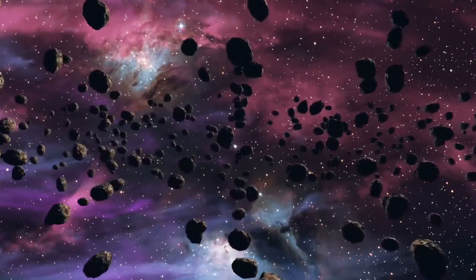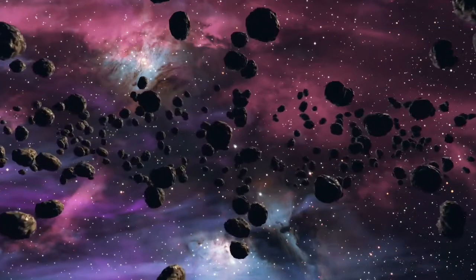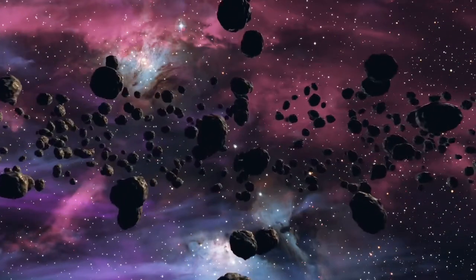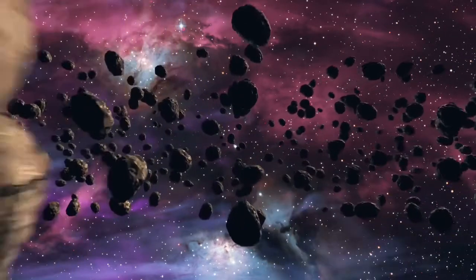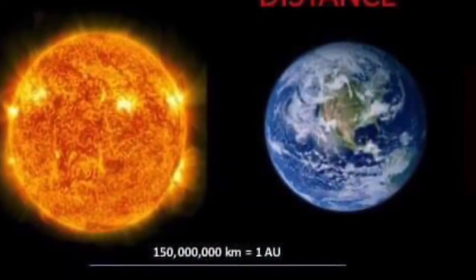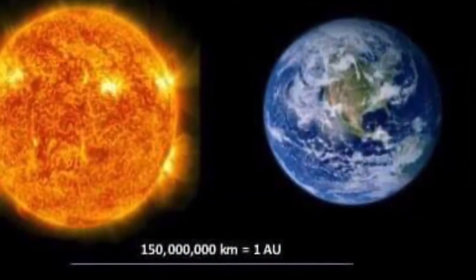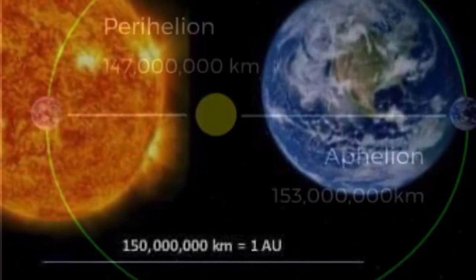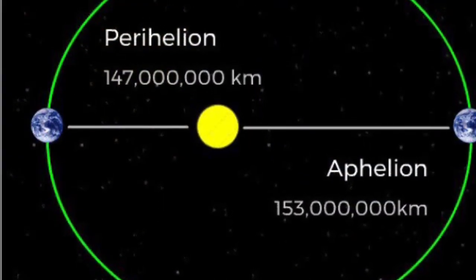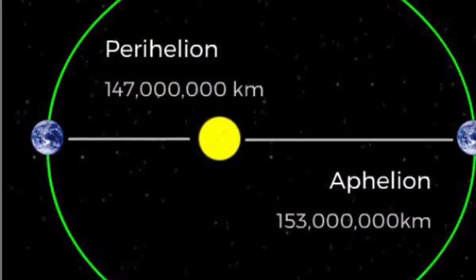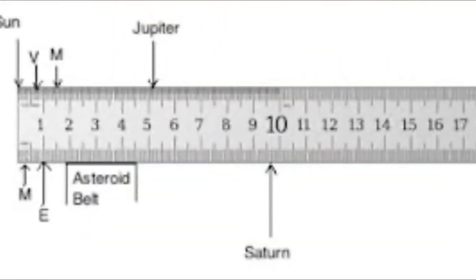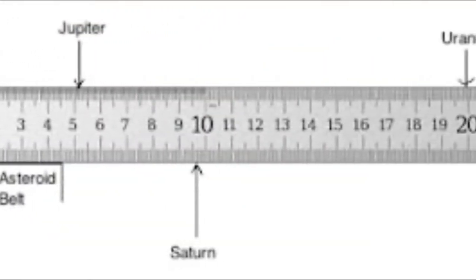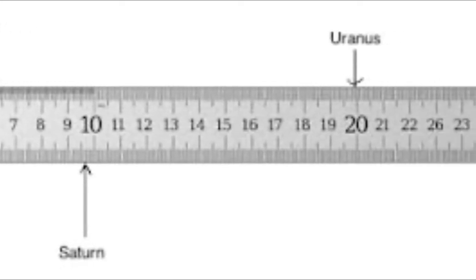Also, did you know asteroids are primarily found in the asteroid belt? The asteroid belt is one astronomical unit thick, or AU. An astronomical unit, or AU, is a unit of length about the distance from the Earth to the Sun — roughly 93 million miles or 150 million kilometres. Did you know Mars is about 0.52 AU away from the Earth, while Jupiter is 4.2 AU away? AU is only one measurement we use to measure space; kilometres and light years are two other ways.